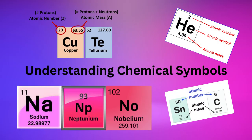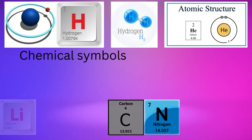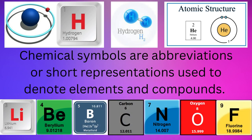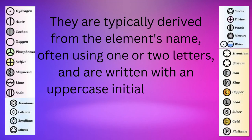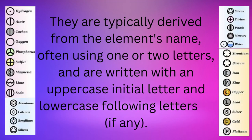Let's get started. Understanding Chemical Symbols: chemical symbols are abbreviations or short representations used to denote elements and compounds. They are typically derived from the element's name, often using one or two letters, and are written with an uppercase initial letter and lowercase following letters, if any.